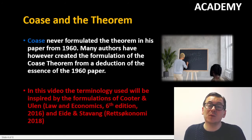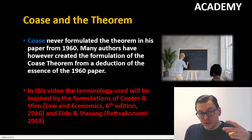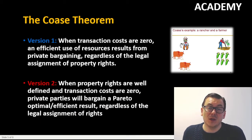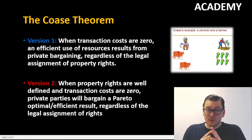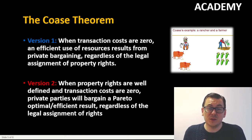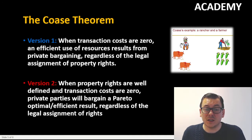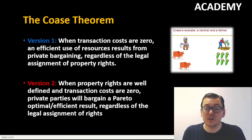In this video I will use two different versions — from Kooten, Ruhlin and Ida, and Stavins. The first version: when transaction costs are zero, an efficient use of resources results from private bargaining regardless of the legal assignment of property rights. Another version: when property rights are well-defined and transaction costs are zero, private parties will bargain to a Pareto optimal efficient result regardless of the legal assignment of rights.